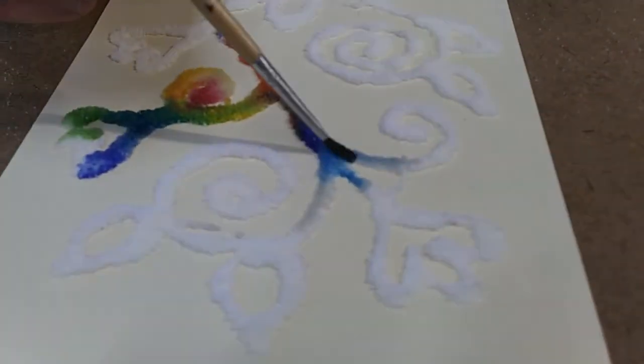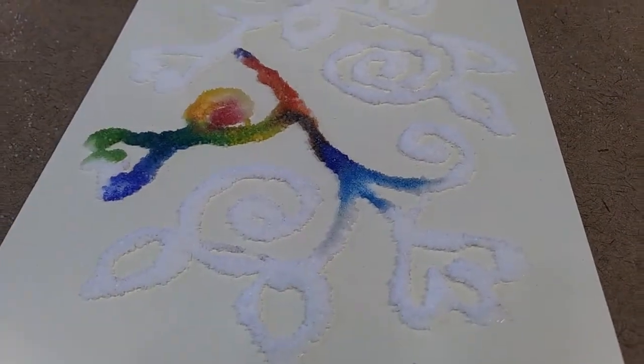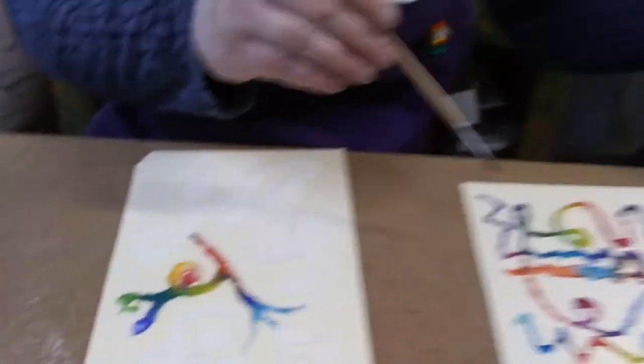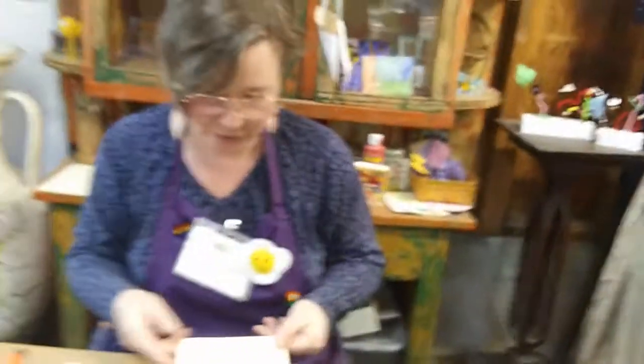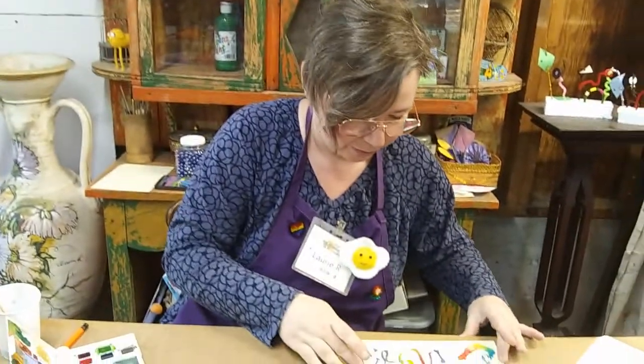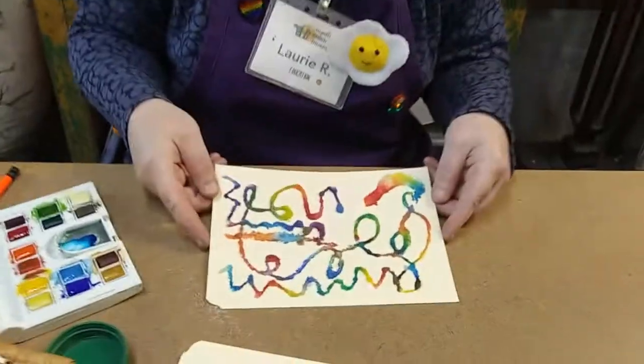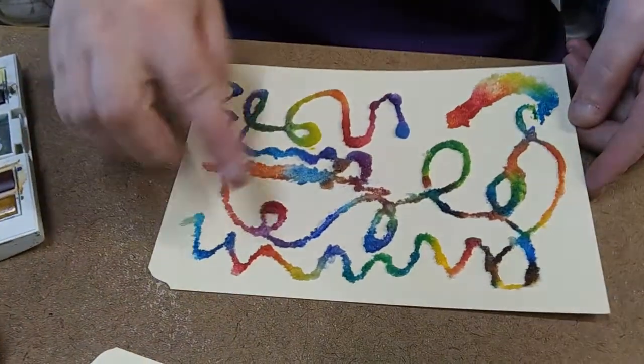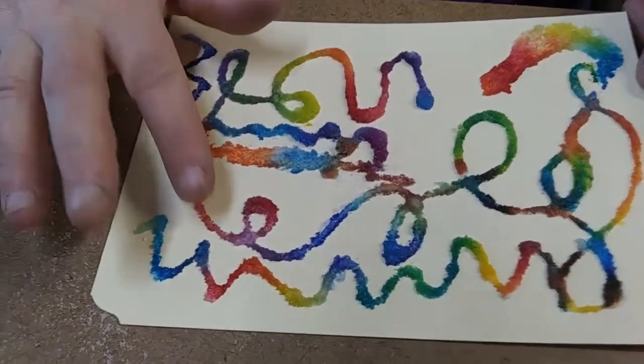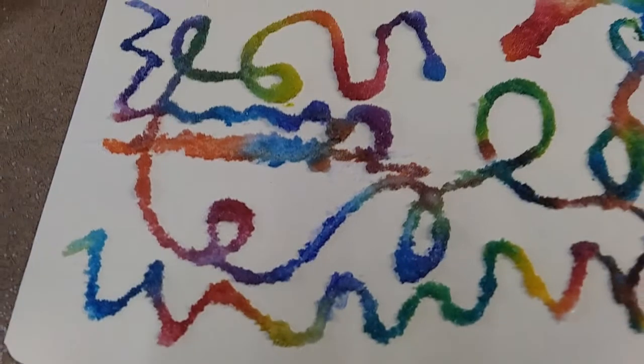And then when you're done painting your salt lines, if you want to, you can go and add more colors to the background. Let me get back to the one that I started earlier. This is what your painting is going to look like when it dries. I see the salt lines are still raised and still textured, but now they have this beautiful rainbow color.